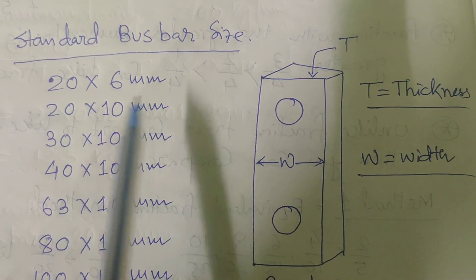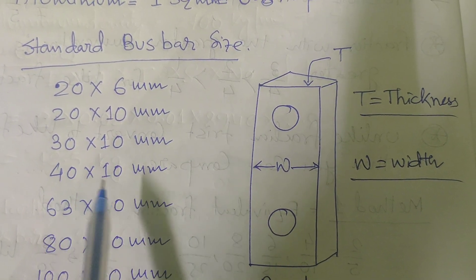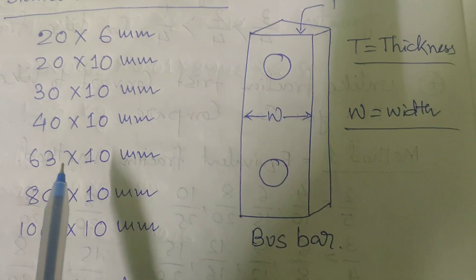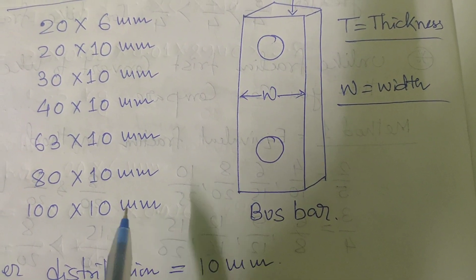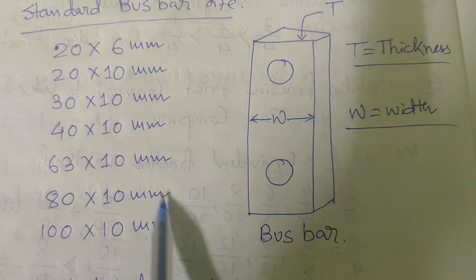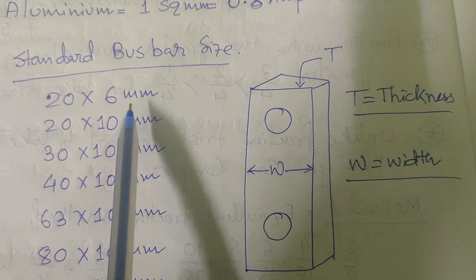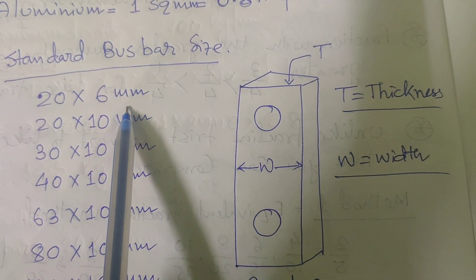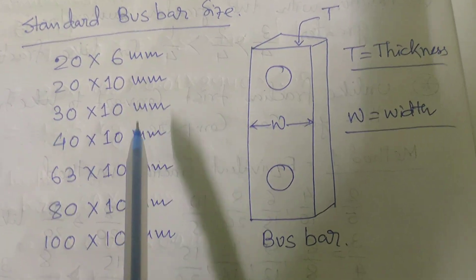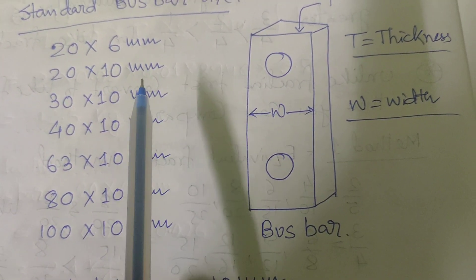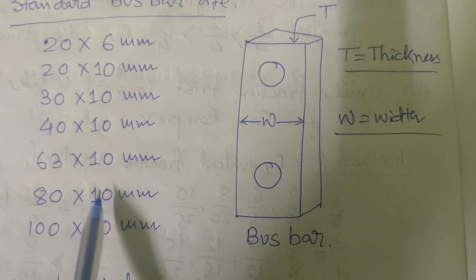Standard busbar sizes are: 20×6 mm, 20×10 mm, 30×10 mm, 40×10 mm, 63×10 mm, 80×10 mm, and 100×10 mm. The 6 mm thickness is used for neutral and earth flat connections, while 10 mm thickness is the standard for power distribution purposes.